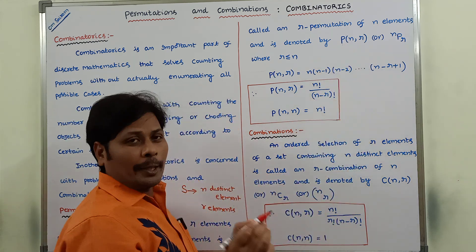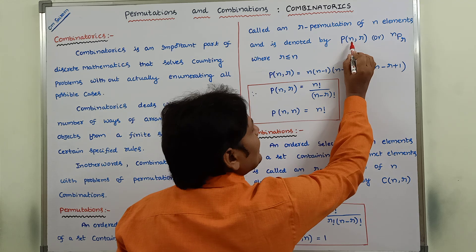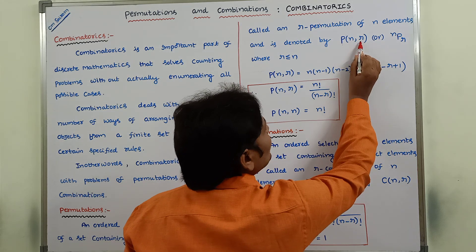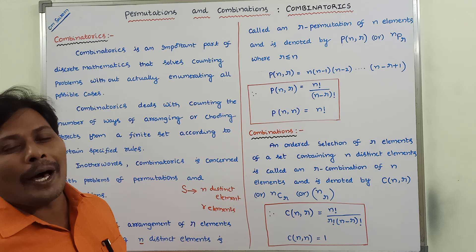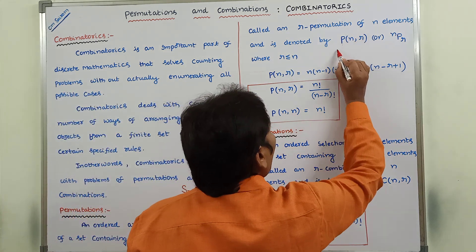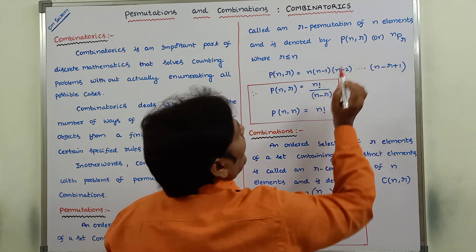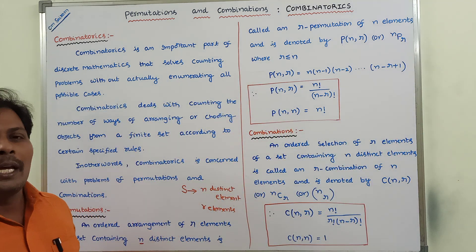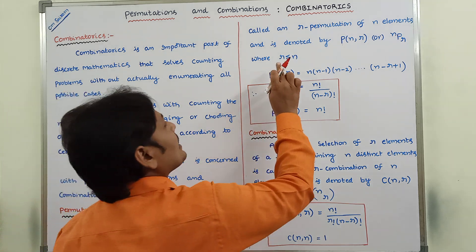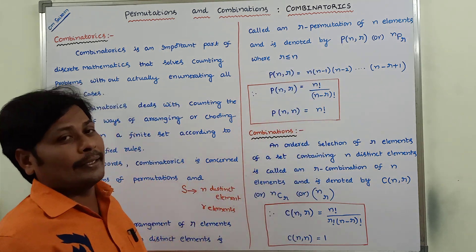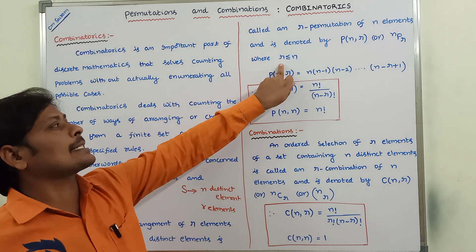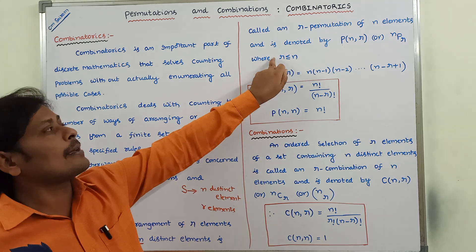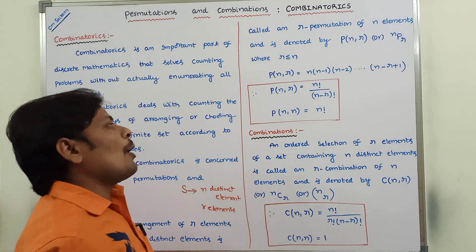An R-permutation of N elements is denoted by P(N, R), where P denotes the permutation, N denotes the finite set containing N distinct elements, and R denotes the number of objects to arrange. It can also be denoted as NPR. The necessary condition that must be satisfied is R less than or equal to N.